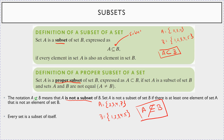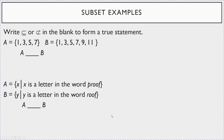Let's do some examples — write if it's a subset or not a subset in the blank to form a true statement. A equals {1, 3, 5, 7} and B equals {1, 3, 5, 7, 9, 11}. Every element of A is in B, and they are not equal, so A is actually a proper subset of B.